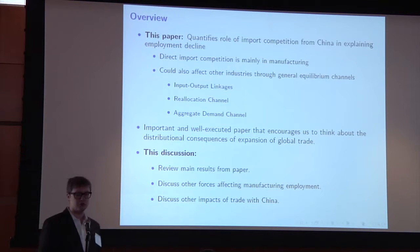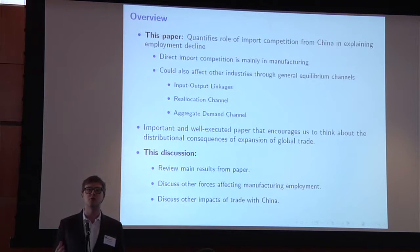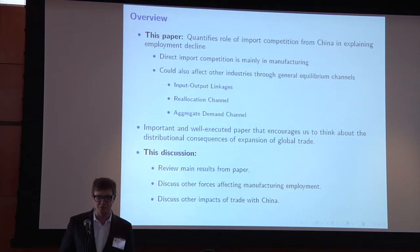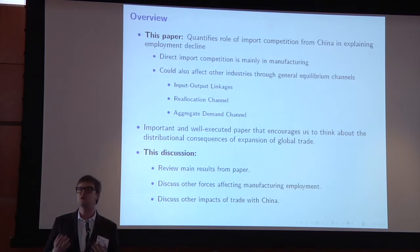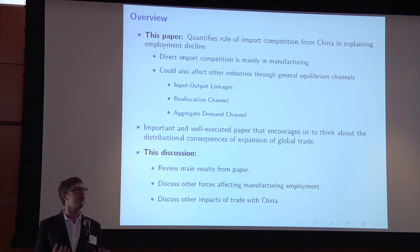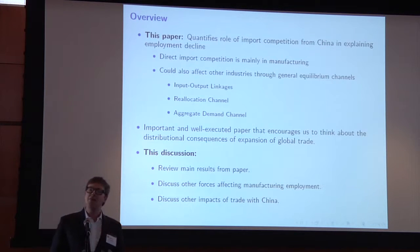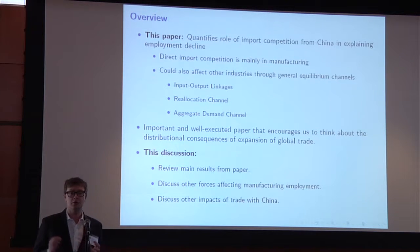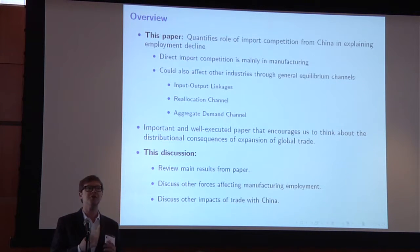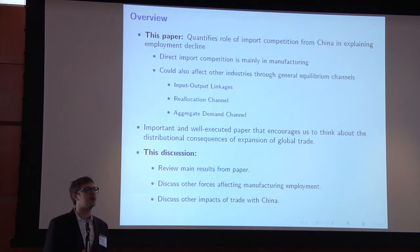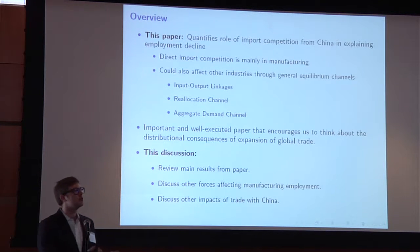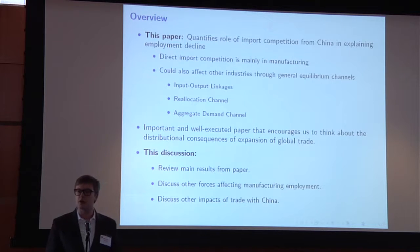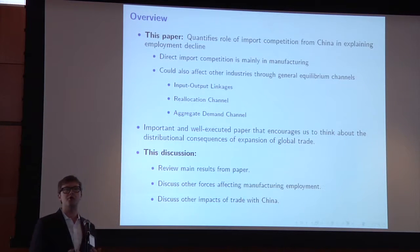Overall I think this is a really well-executed and important paper that helps us think through the distributional consequences of the expansion of global trade, and it fits nicely on the agenda of this conference. It's forthcoming in the Journal of Labour Economics. I'm going to focus this discussion on first summarizing the main takeaways from this paper, and then discussing two separate points. First, the other things that help explain the decline in manufacturing employment — if about six million jobs were lost in manufacturing, the paper can explain a quarter to a third of that.